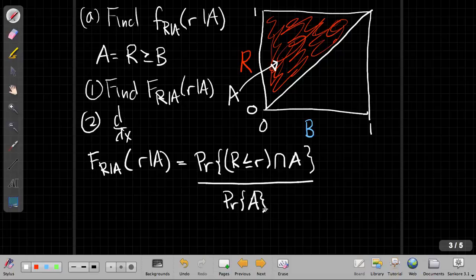All divided by the probability of A. That's directly out of the definition of a conditional probability. And so let me rewrite this, substituting the real event for A. So this is R is less than little r.